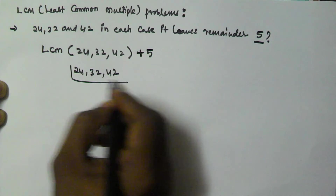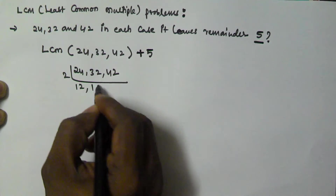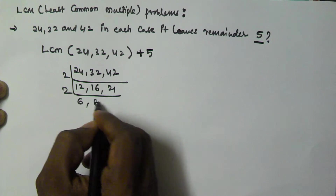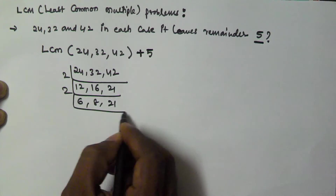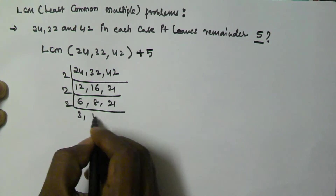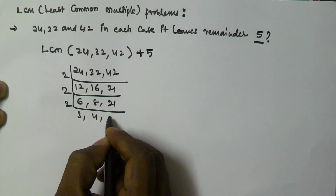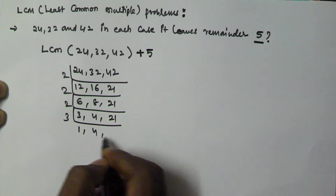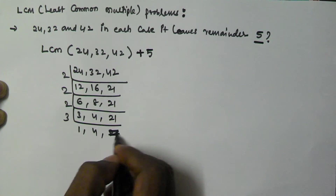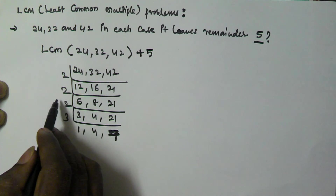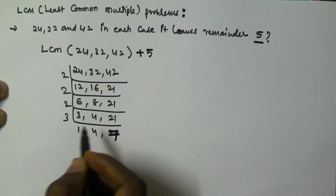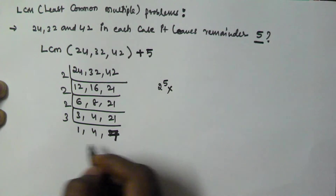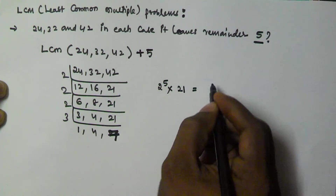To find the LCM of 24, 32, and 42, we divide: 2 gives 12, 16, 21; then 2 gives 6, 8, 21; then 2 gives 3, 4, 21; then 3 and 1 give 1, 4, 7; and 2 gives 2 squared. So we have factors 2 to the power of 5, multiplied by 3, multiplied by 7.